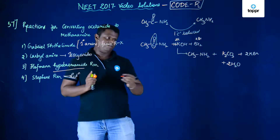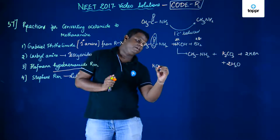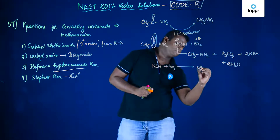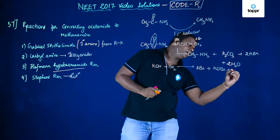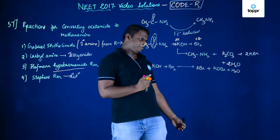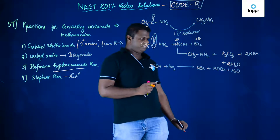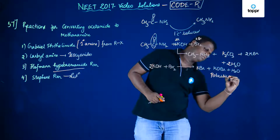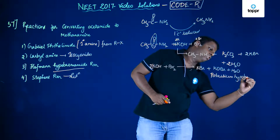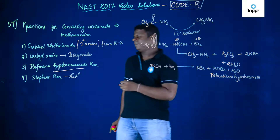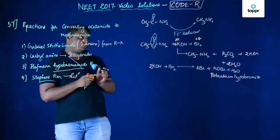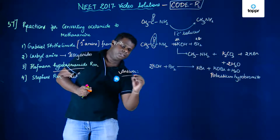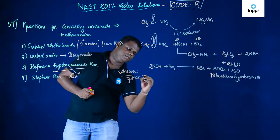The question is why is this called the hypobromide reaction? Basically, KOH reacts with Br2 to form KBr plus KOBr plus H2O. You need 2 moles of water here. This KOBr is nothing but potassium hypobromide — you can also use sodium hydroxide. That's the reason it is called the Hoffman hypobromide reaction. So the correct answer for this question is option 3.